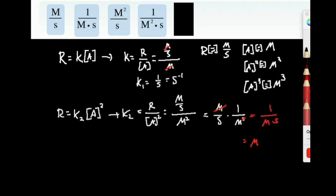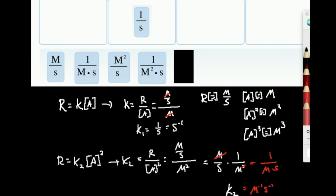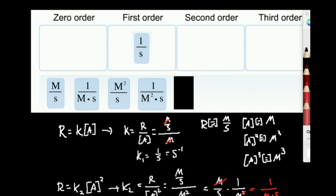Another way of seeing this is inverse molar inverse seconds. And that will be the rate constant for a second order reaction. So 1 over molar, 1 over seconds. And sure enough, I see one that looks just like that. That's for a second order reaction.